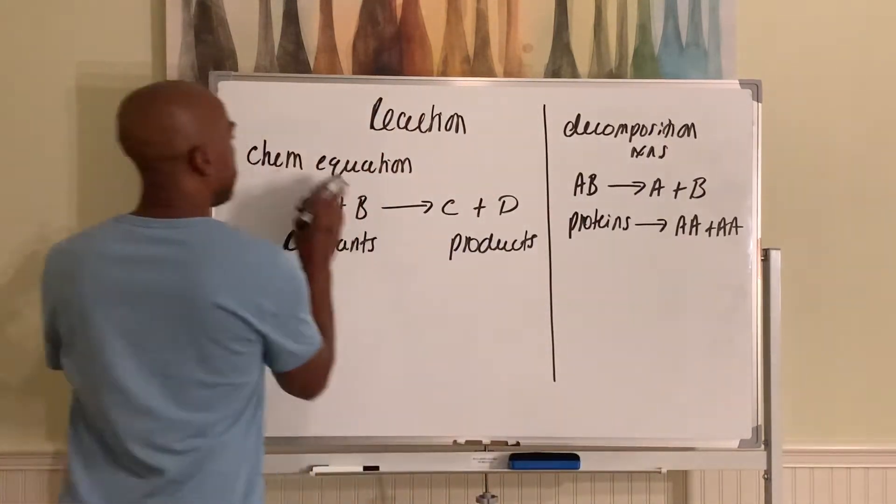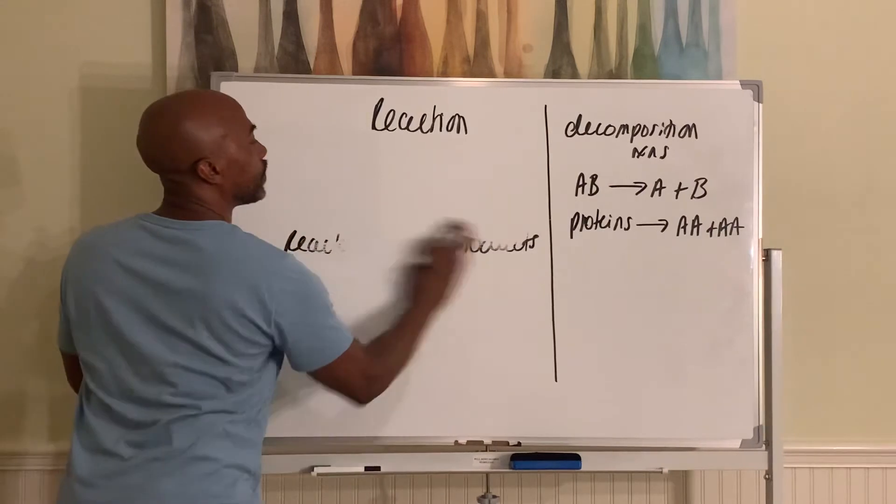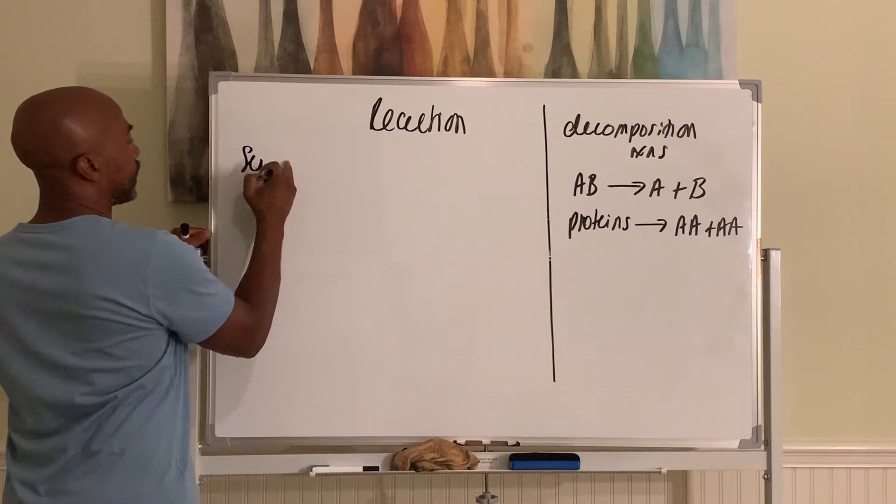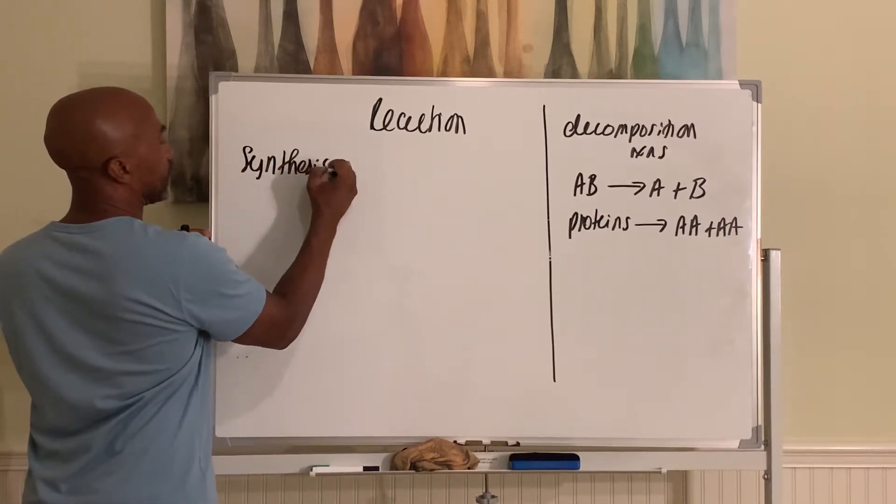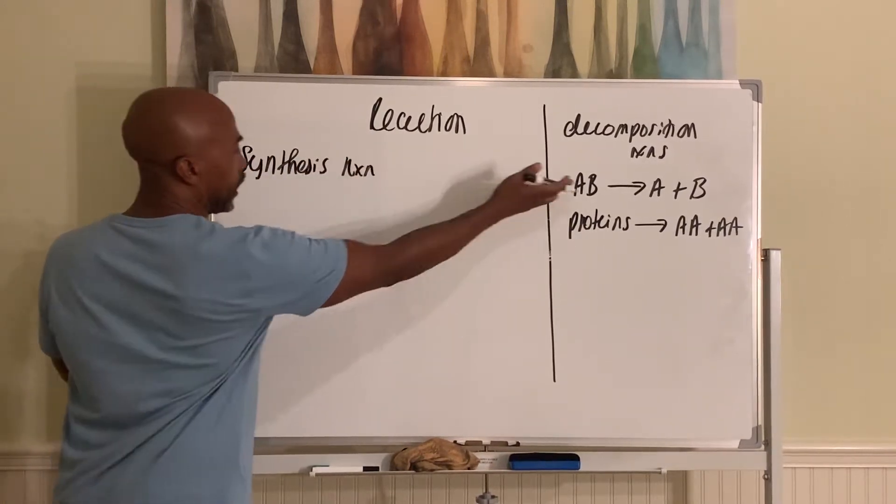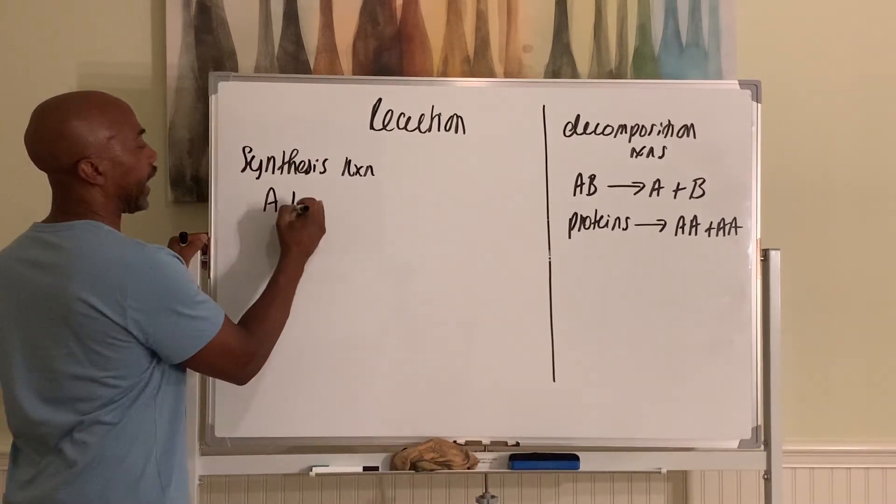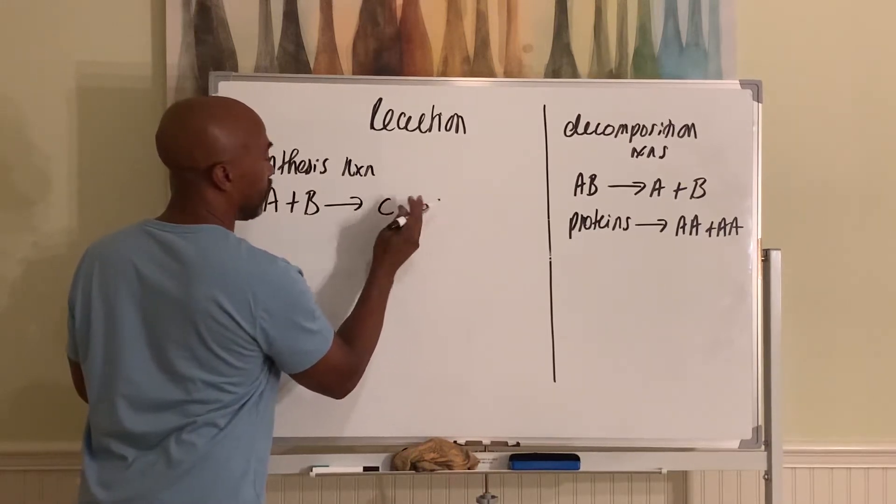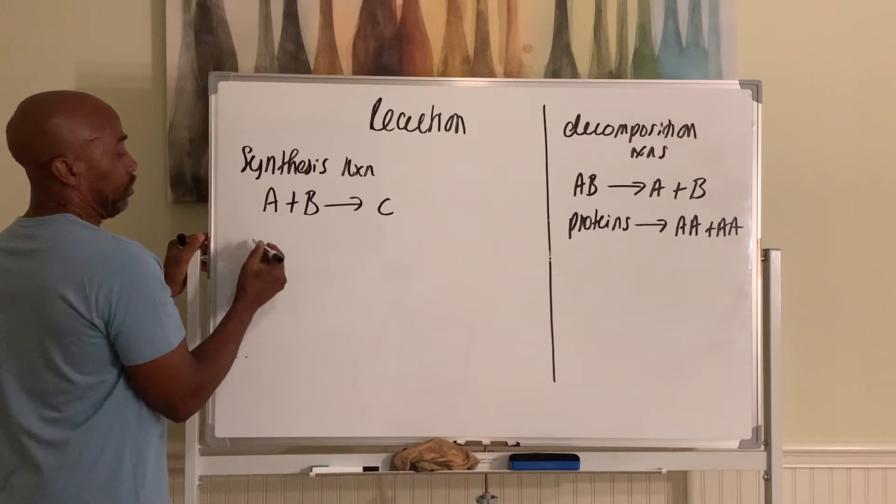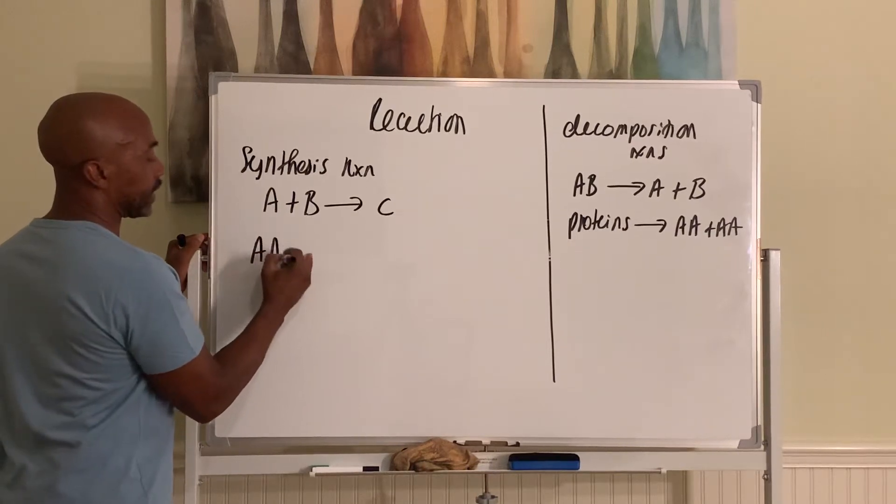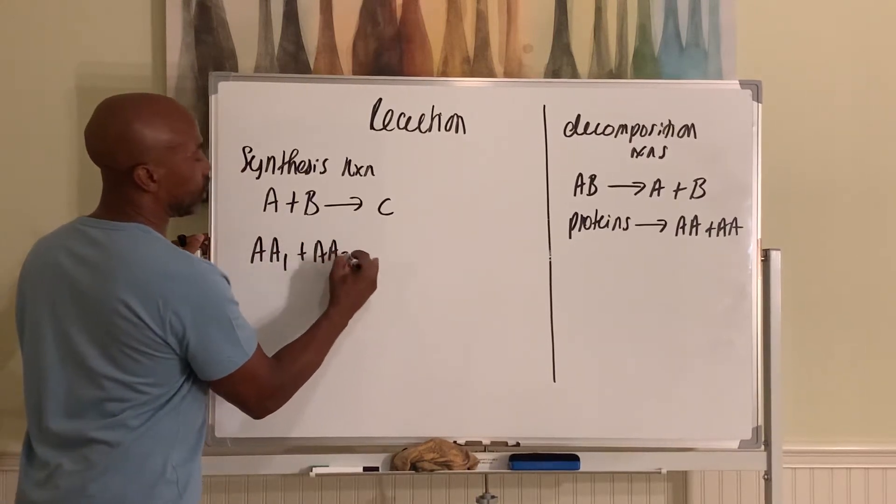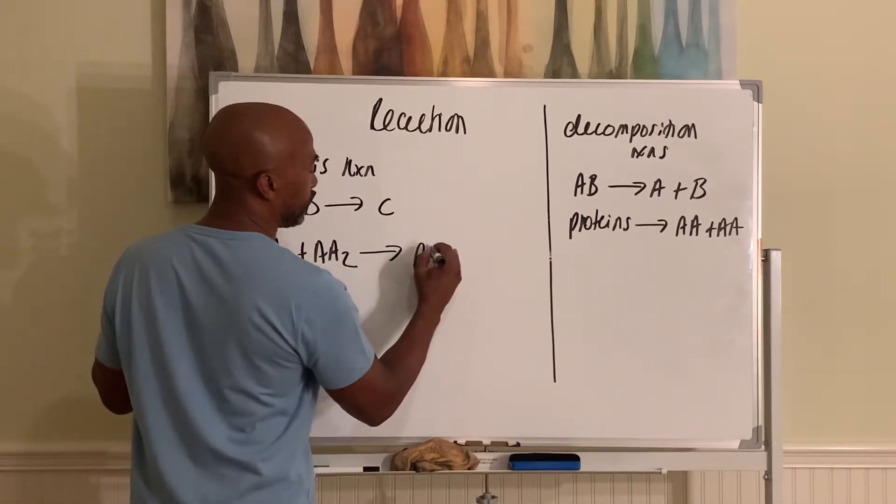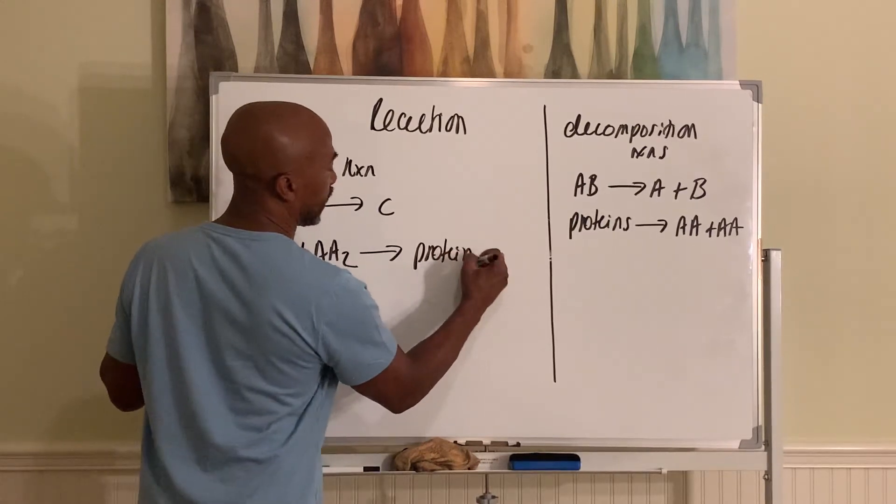You also have reactions that build things. So you have your synthesis reactions. These are the opposites, of course, of decomp reactions where now A plus B gives you C. A good example here would be amino acids. Amino acids 1 plus amino acid 2 would combine to form a peptide chain or a protein. That's building things up, reactions of synthesis.